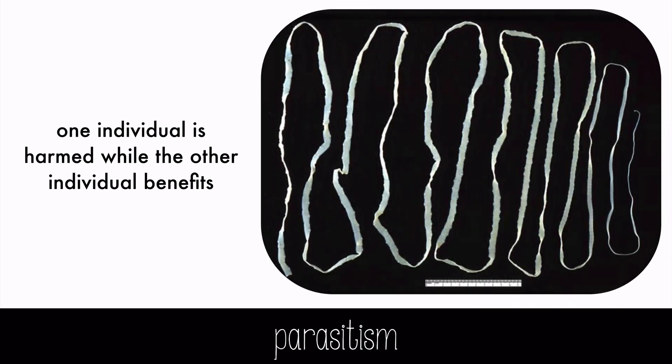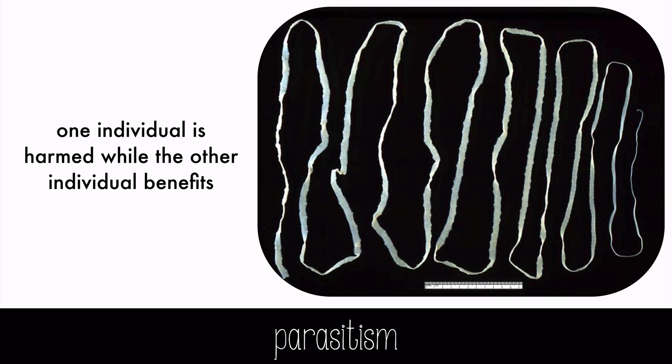Parasitism is a relationship in which one individual is harmed while the other individual benefits. Unlike many forms of predation, parasitism usually does not result in the immediate death of the host. One example of a parasite is a tapeworm. Tapeworms live in the host's small intestine and absorb nutrients directly through their skin. They reproduce by making egg-filled chambers, which are released in their host's feces. The host will have a difficult time maintaining their weight, and it could lead to sickness or death.